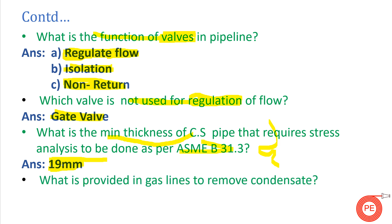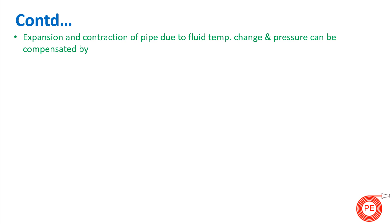The next question is: what is provided in gas lines to remove condensate? Gas contains moisture content which forms condensate, and this must be removed from the lines so it does not harm downstream equipment. Drip ports are provided to remove condensate from gas lines. Similarly, for steam lines, steam traps are used to remove condensate.